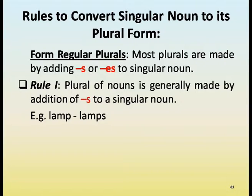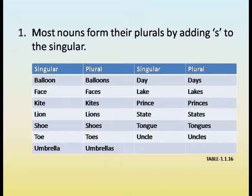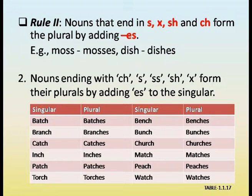Rules to convert singular noun to plural form. Regular plurals: most plurals are made by adding S or ES to a singular noun. Rule 1: plural of nouns is generally made by addition of S. Example: lamp — lamps. Rule 2: nouns that end in S, Z, X, SH, CH form the plural by adding ES. Example: moss — mosses; dish — dishes.